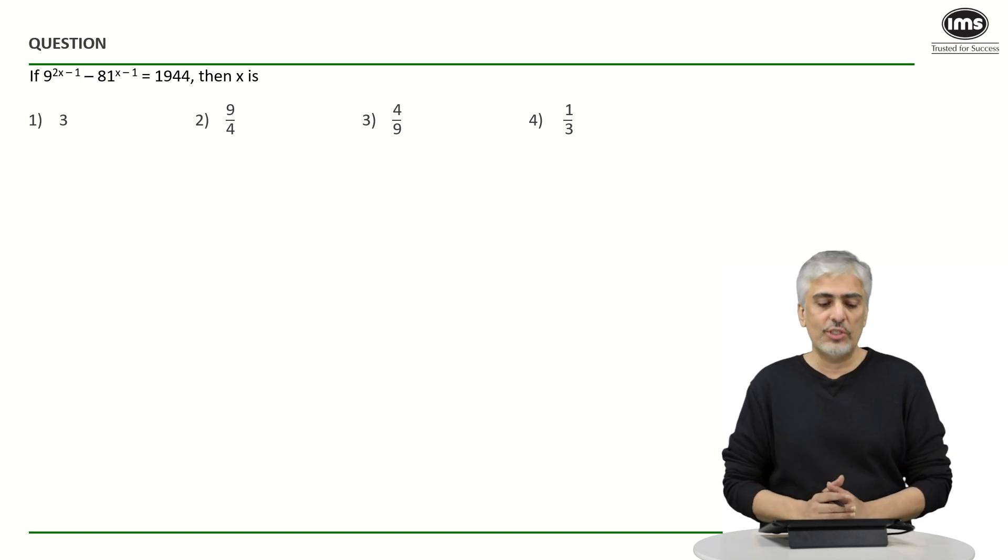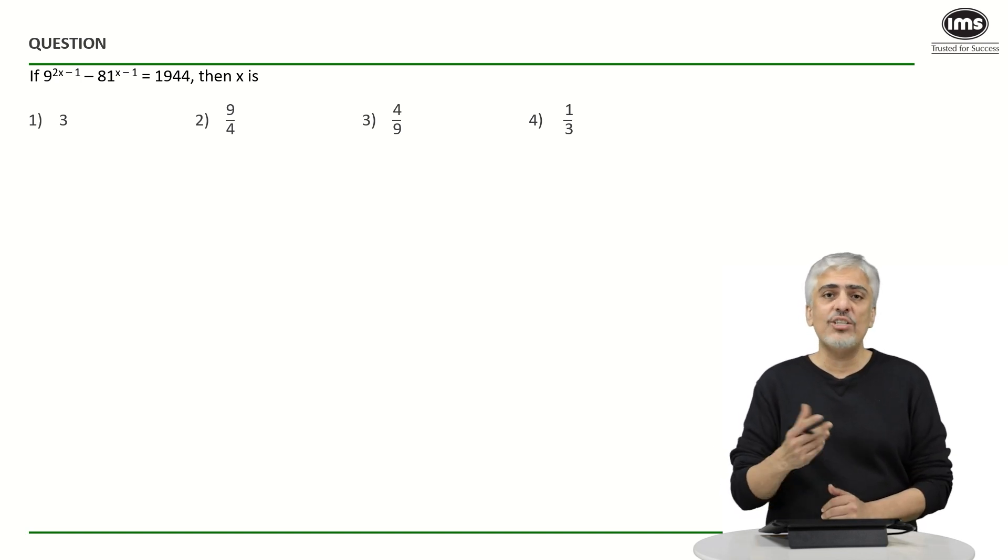Let's have a look at a couple of approaches to the question. You can see 9 raised to 2x minus 1 minus 81 raised to x minus 1 is 1944.